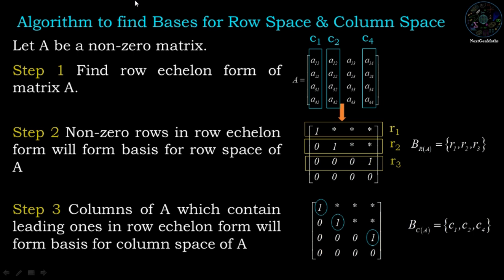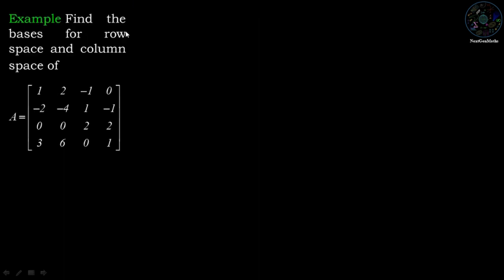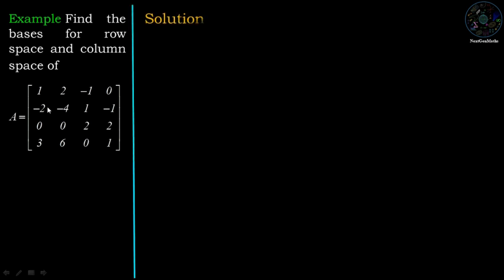Now we are going to understand this algorithm through an example. Find the basis for row space and column space of A. In the first step, we are going to find the row echelon form of matrix A.